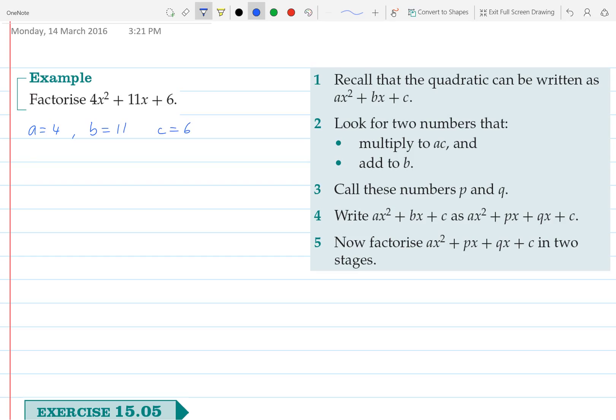It says look for two numbers that multiply to ac, so ac would be 24, and add to b. So I've got to try and come up with two numbers that multiply to 24 but add to 11. Let's look at all the factors of 24: we've got 4 and 6 already which it obviously isn't, we've got 2 and 12, we've got 24 and 1, we also have 8 and 3, and of course 8 and 3 add to 11.